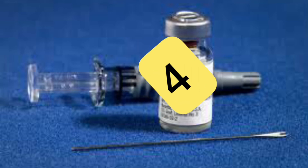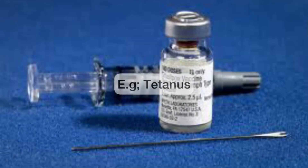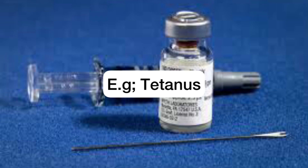The fourth type of vaccines are the toxoid vaccines, in which toxins of bacteria are deactivated using a mixture of formaldehyde and water. These dead toxins are then safely injected into the body. The immune system learns well enough from the dead toxins to fight off living toxins should they ever make an appearance. An example of a toxoid vaccine is the tetanus vaccine.